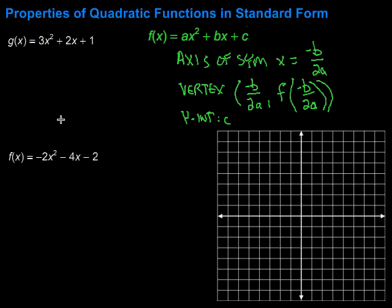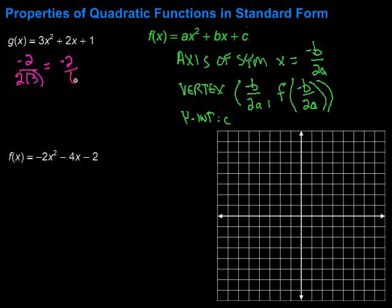For this first example, let's find the axis of symmetry. That is negative b over 2a. Here, b is the coefficient with the x term, so we get negative 2 over 2 times a. The a — the coefficient with the x squared term — is 3, so that's 2 times 3. Simplifying: negative 2 over 6, which reduces to negative 1 third. So our axis of symmetry is x equals negative 1 third.